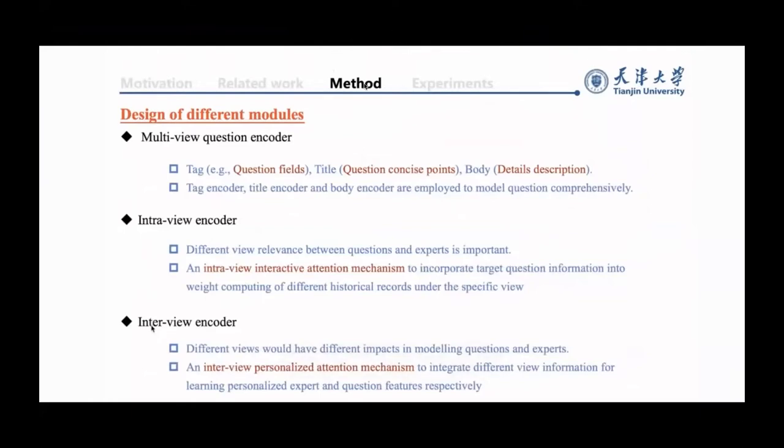The question tag would be highly relevant to question fields and contain important information of the question. The question title indicates brief and concise points of the question. The question body could describe the question in more detail. We design a title encoder and a body encoder in multi-view question encoder to capture different view representations for questions.